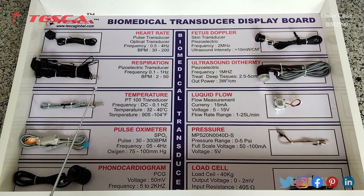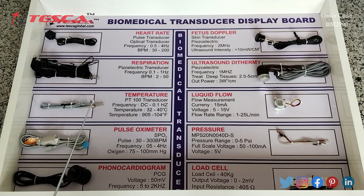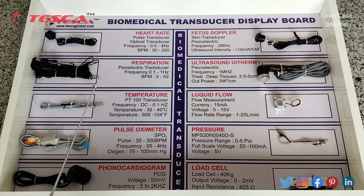Then this is the temperature transducer. Its frequency range is 0.1 hertz. Its temperature range is 32 to 40 degree Celsius, and its temperature range in Fahrenheit is 90.5 to 104 degree Fahrenheit.